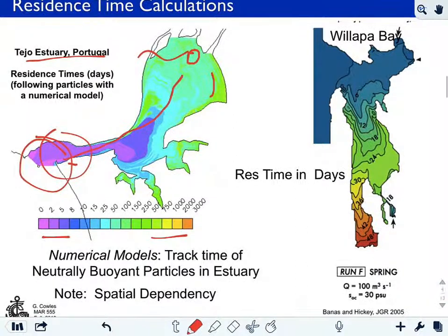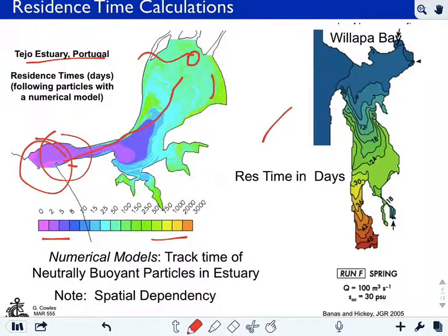Here's a similar model for another numerical model for Willapa Bay. Here you have the Pacific Ocean here, and there's a few rivers up here, Bay River and others, that are supplying fresh water to Willapa Bay in Oregon, or Washington rather.